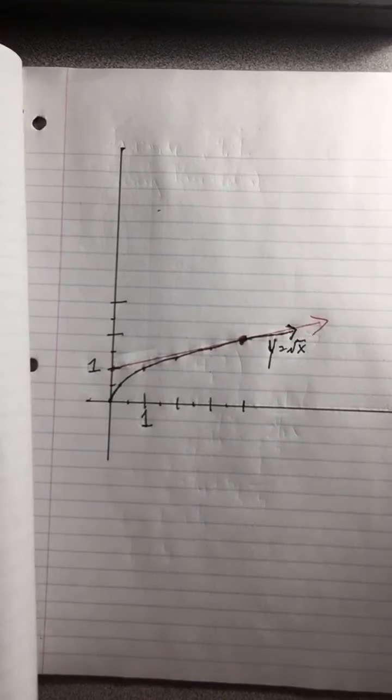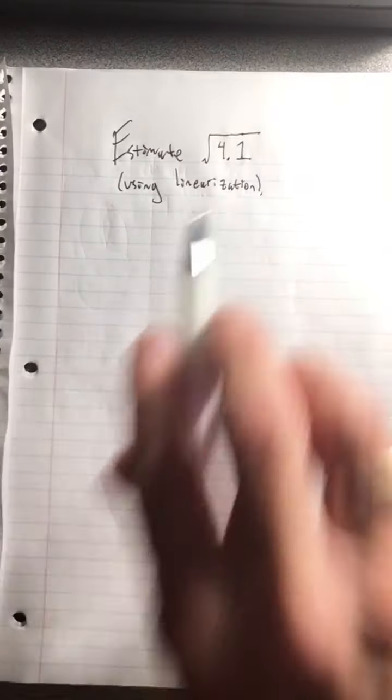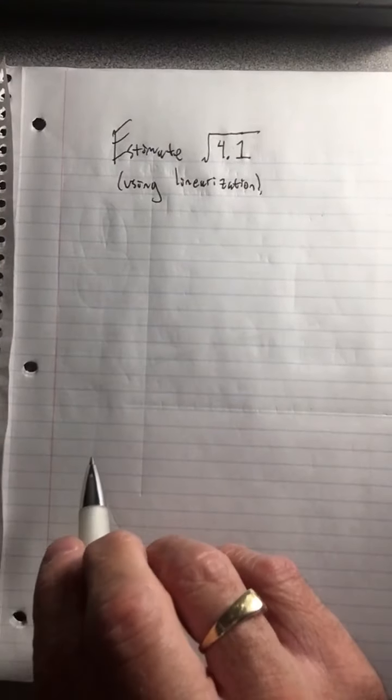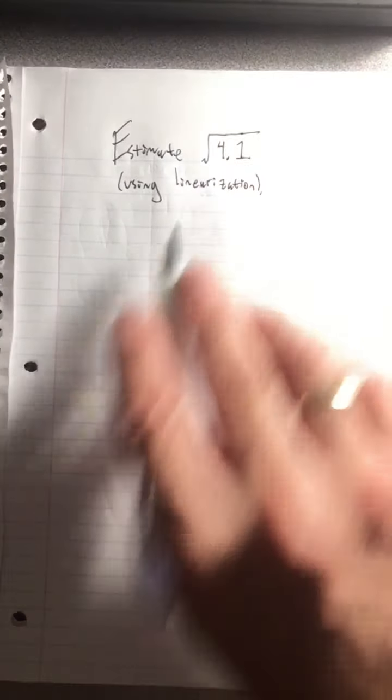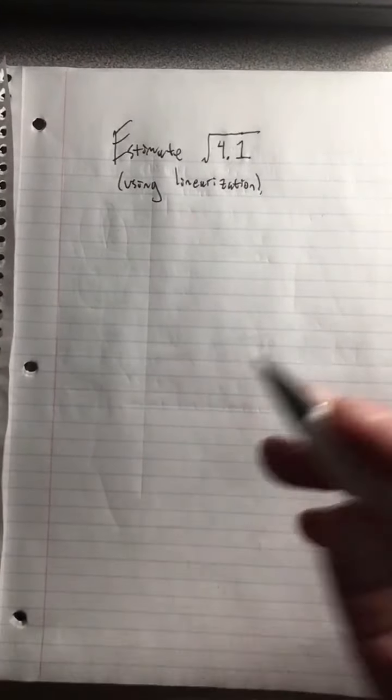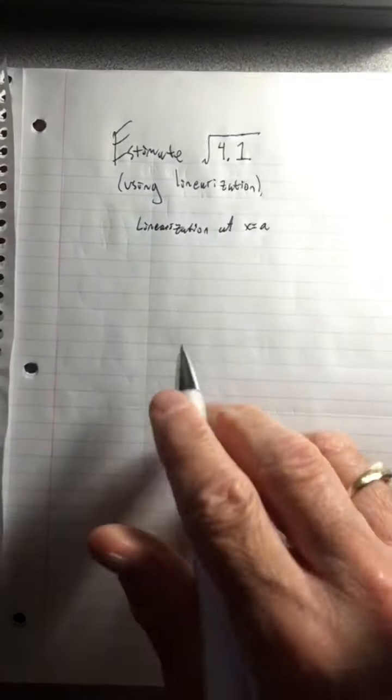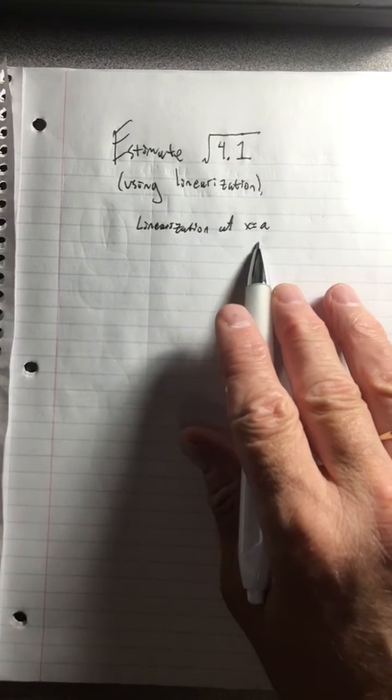So when we hear the word linearization, we're just thinking tangent line. And for this particular problem, we want a linearization at some given x value that's convenient. So we talk about the linearization at x equals a, sort of like we did with tangent lines. We said find the tangent when x is a.